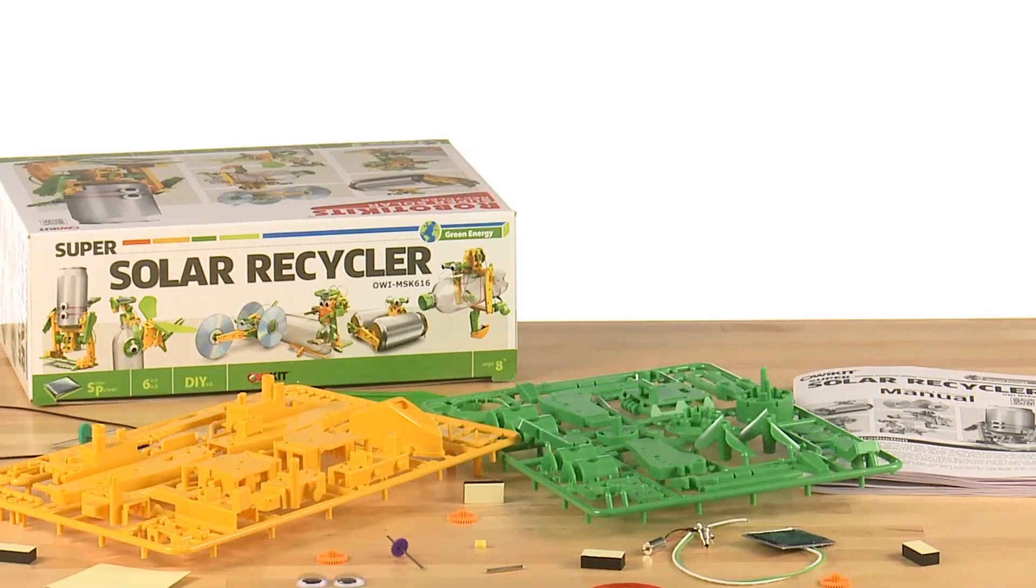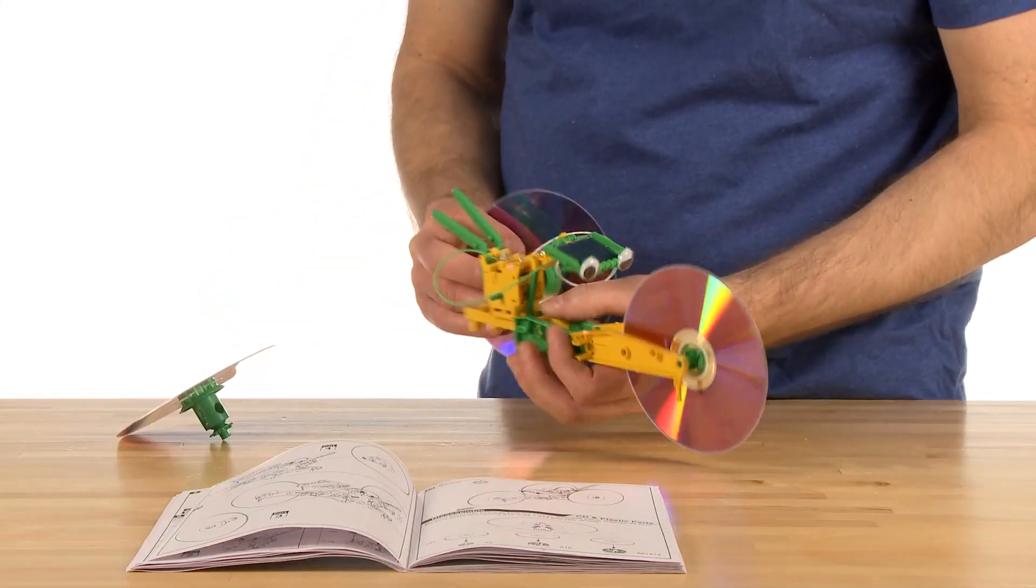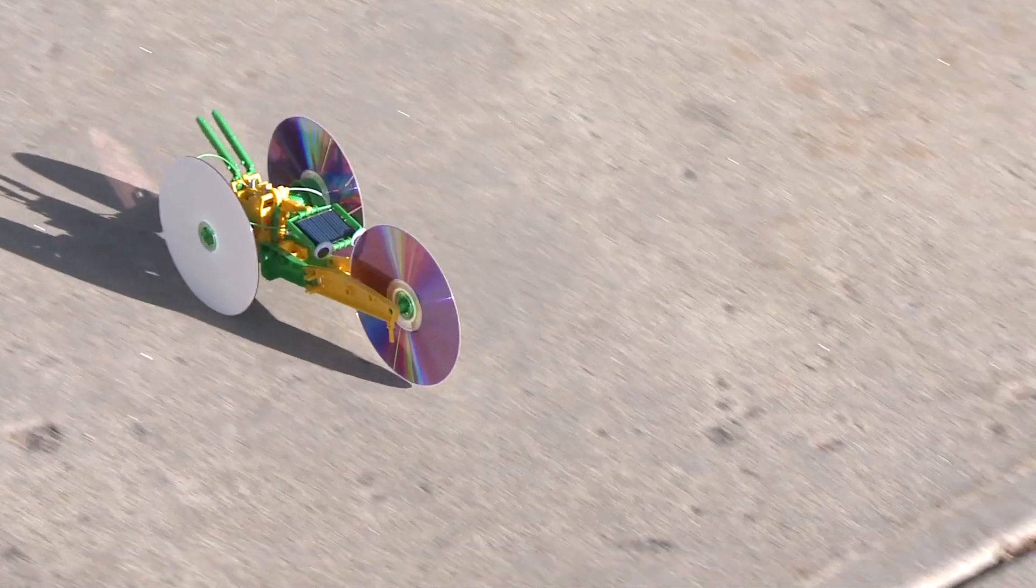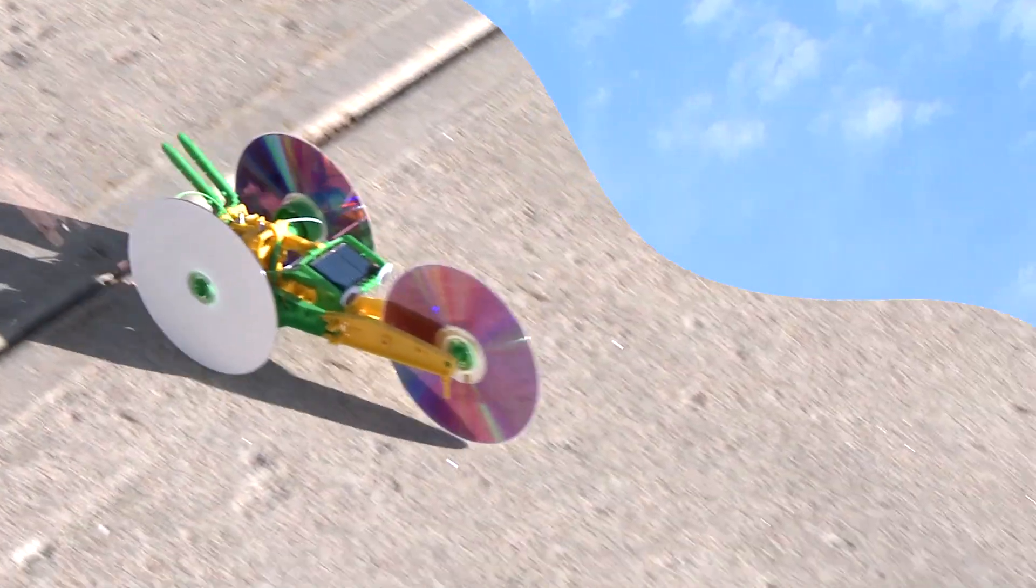Super Solar Recycler is an eco-friendly educational toy kit that utilizes recycled components to create solar-powered robots that operate by using the power of the Sun.